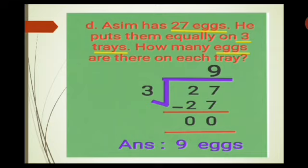27 is to be divided, and 3 divides 27, so 3 is our divisor. Read the 3 times table: 3 times 9 is 27. Write 27 inside the division sign; 27 minus 27 equals 0, remainder 0. So there are 9 eggs on each tray. Write the answer: 9 eggs.